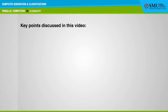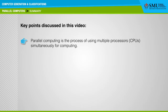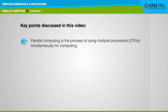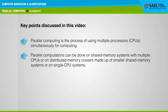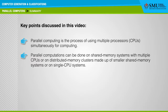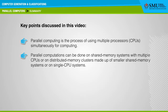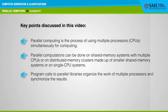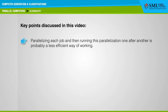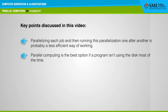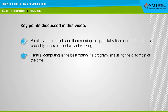Key points discussed in this video: Parallel computing is the process of using multiple processors or CPUs simultaneously for computing. Parallel computations can be done on shared memory systems with multiple CPUs, on distributed memory clusters made up of smaller shared memory systems, or on single CPU systems. Program calls to parallel libraries organize the work of multiple processors and synchronize the results. Parallelizing each job and running this parallelization one after another is probably a less efficient way of working. Parallel computing is the best option if a program isn't using the disk most of the time.